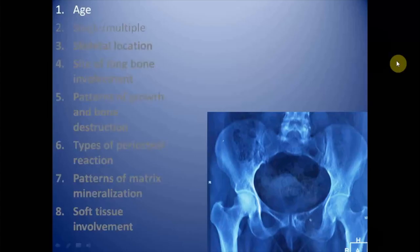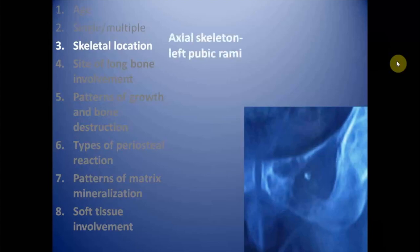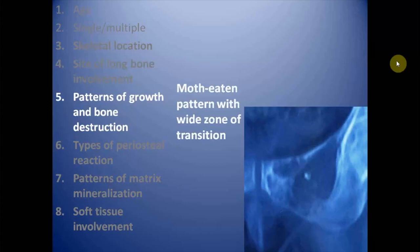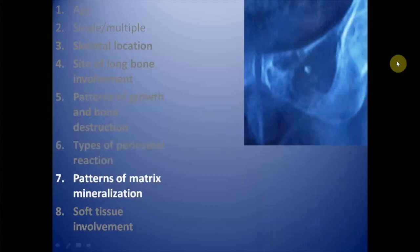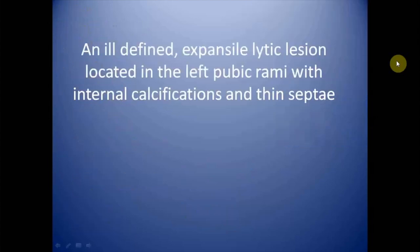Age of the patient is 45 years — a middle-aged female. The lesion is single. The skeletal location is the axial skeleton, involving the ischiopubic rami, so site of long bone involvement is not applicable. The pattern of growth shows a moth-eaten pattern of bone destruction with a wide zone of transition. The periosteal reaction is aggressive. There is a small focus of calcification with internal septations and definite soft tissue involvement. This is an ill-defined expansile lytic lesion located in the left pubic rami with internal calcifications.